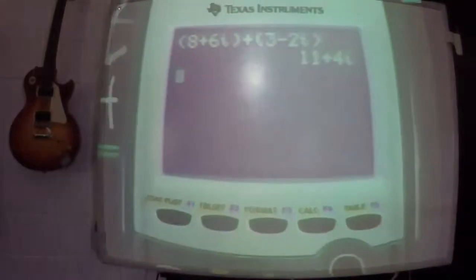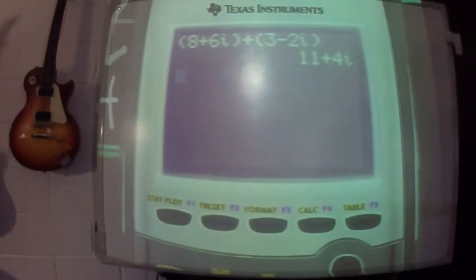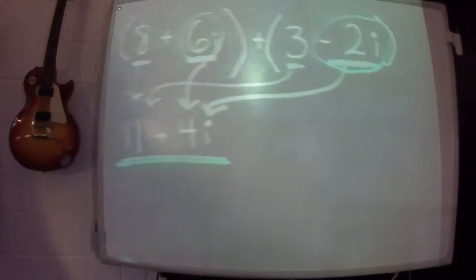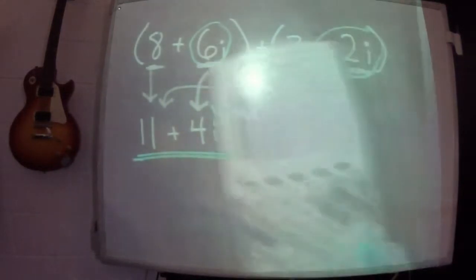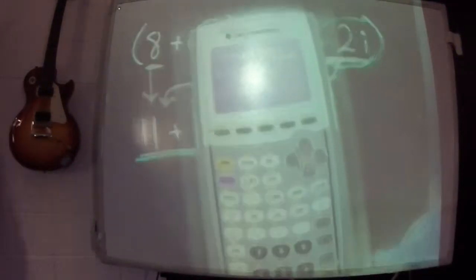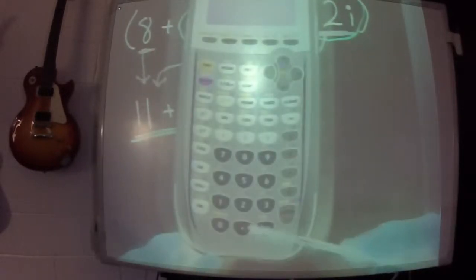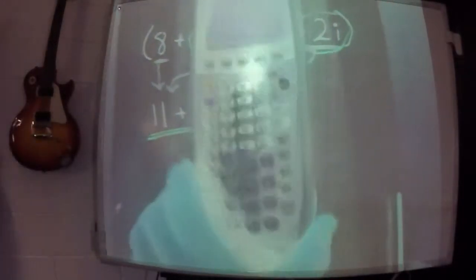So that's going to make it easier for you to add them, subtract them, multiply them, divide them. Now honestly, you probably didn't need the calculator for this. Just add eight and three, and add six and negative two. But as things get more complicated, or if you want to check to make sure you did it right, you know where to go for the i.